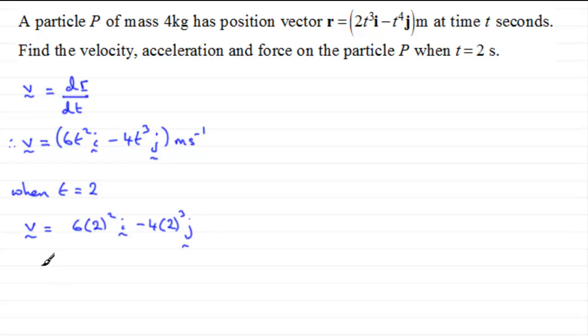And so, if we do that, we've got 6 times 4, which is 24, 24i. And then we've got minus 4 times 2 cubed, which is 8. Minus 4 times 8 is minus 32 in the j direction. Let's not forget to put that in brackets and say that that is meters per second. So that's our velocity v when t equals 2.